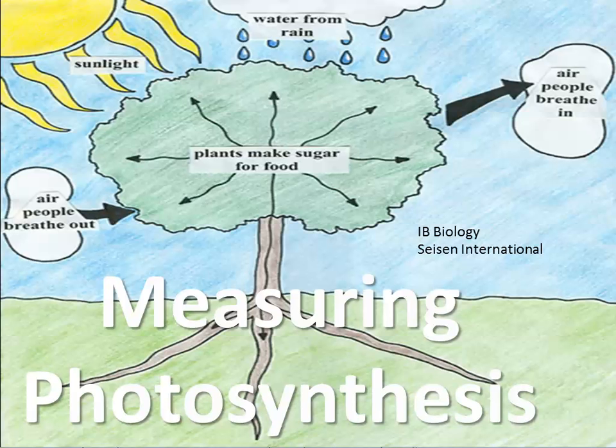If you're doing an experiment on photosynthesis, you probably know that some of your independent variables could be light intensity, carbon dioxide concentration, or temperature. But how will you actually know if you're affecting photosynthesis? You want to be able to figure out how you can identify or measure photosynthesis.